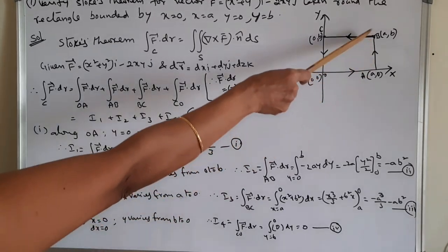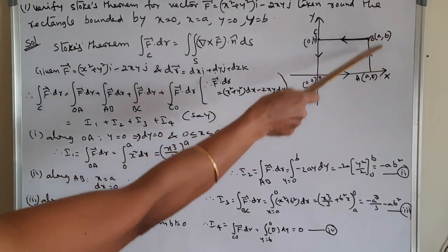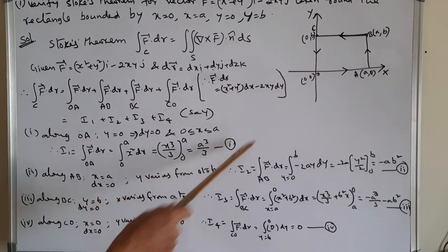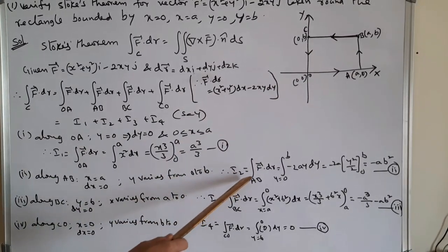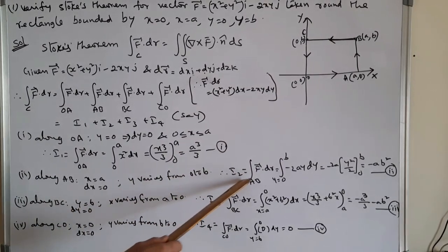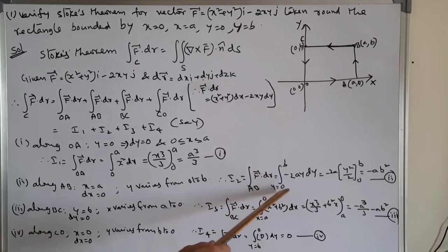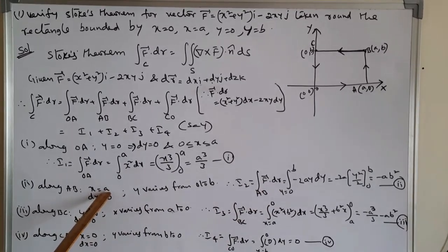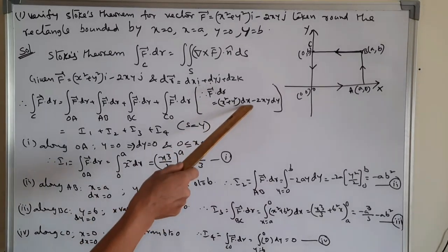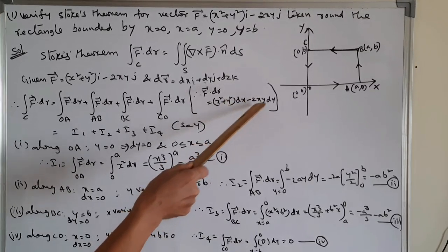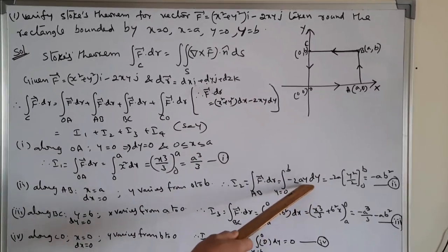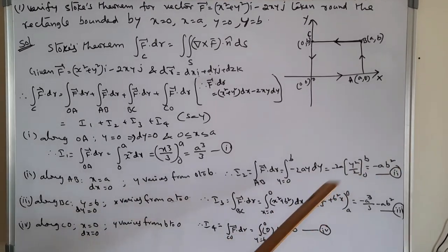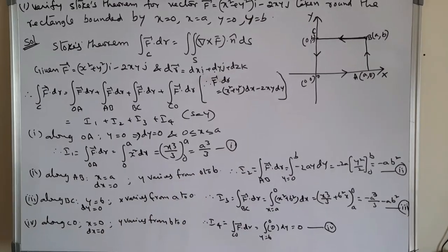Next, I2: along AB, x = a, so dx = 0, and y varies from 0 to b. Therefore I2 = integral of F̄ · dr̄ over AB. Substituting x = a and dx = 0, the first term vanishes and we get −2ay dy. Integrating from 0 to b gives −ab². Consider this as equation (II).